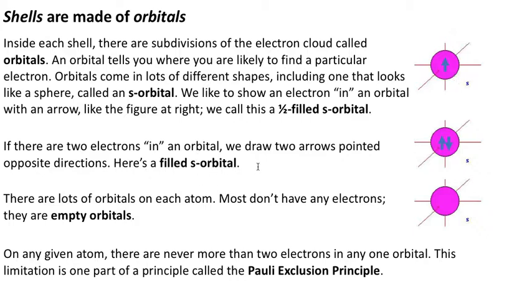If there are two electrons in an orbital, we draw two arrows pointed in opposite directions. Here's how we would describe a filled s-orbital. There are lots of orbitals on each atom. Most don't have any electrons; they are empty orbitals.